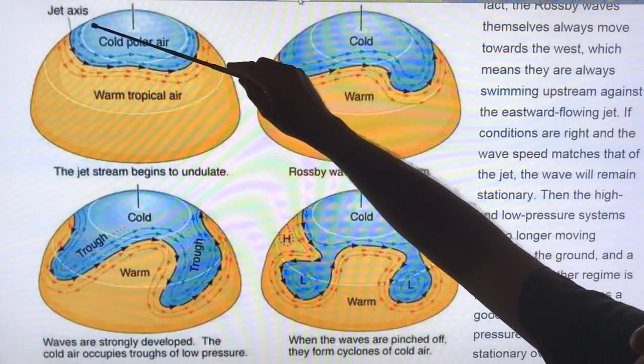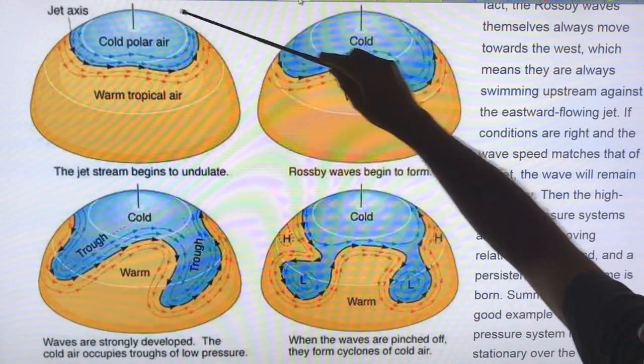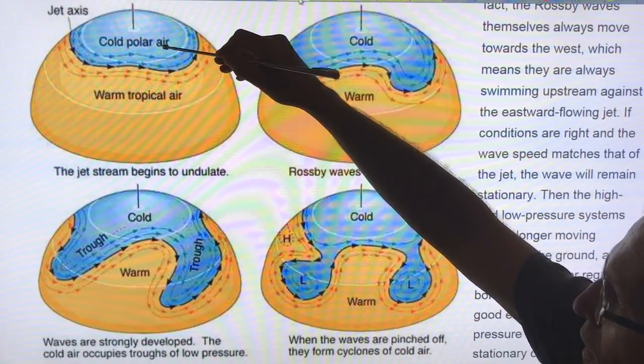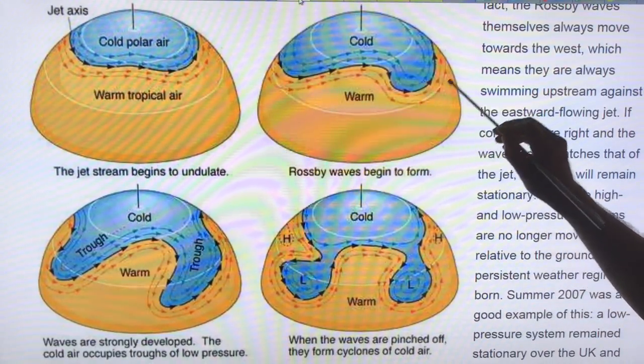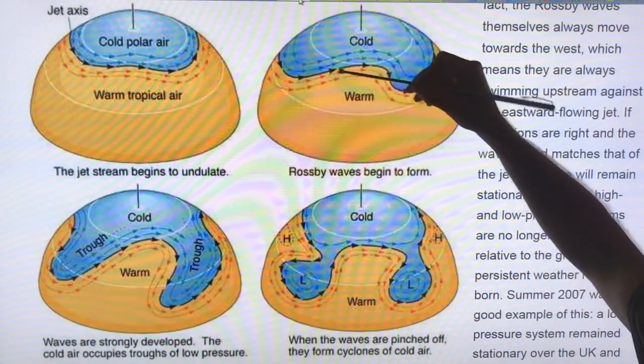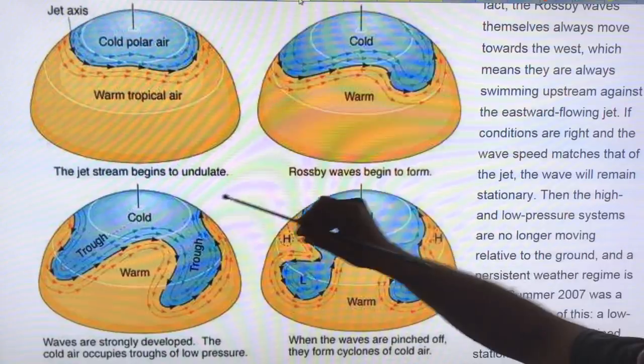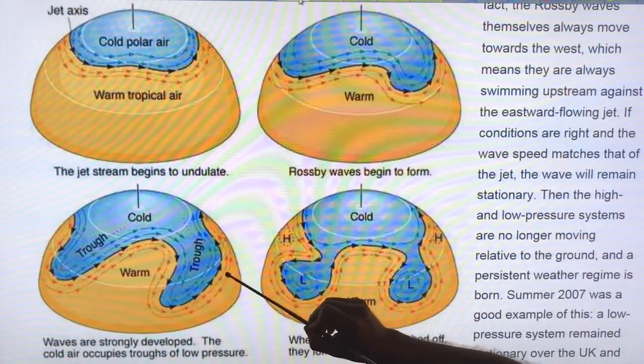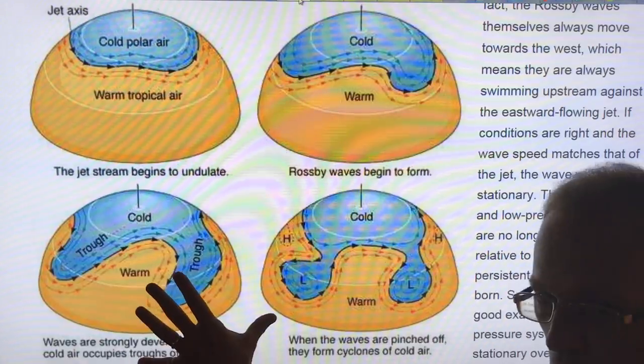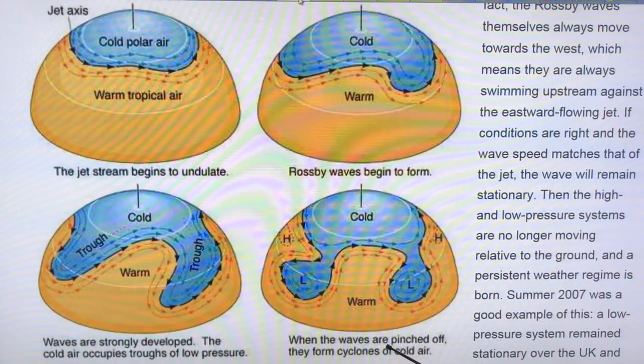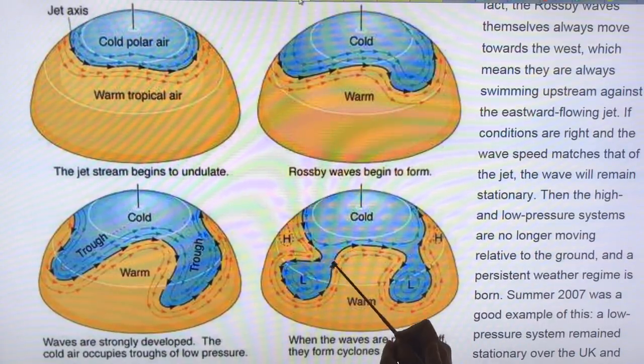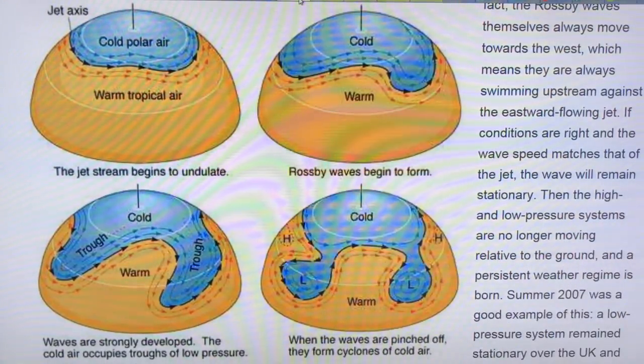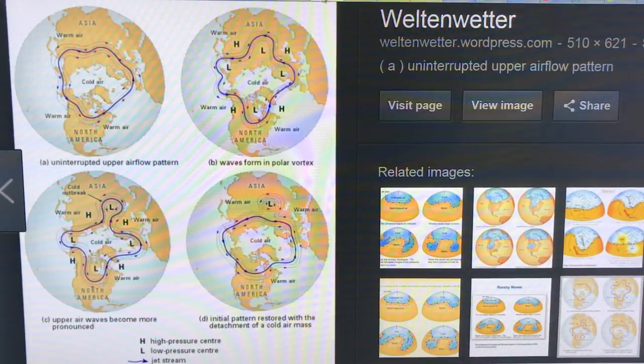So there's lots of images here of the jet stream. The key thing is that the jet stream separates cold air from warm air. Here's a case where the jet stream is mostly zonal, going from west to east around the planet. Then you can get these waves developing, especially when the Arctic is warming. You get these undulations or waves called Rossby waves that begin to form. This is where the waves are strongly developed. So you have a trough here and a ridge here. This type of pattern gets stuck into place. It's persistent. And then you can get these waves being pinched off.